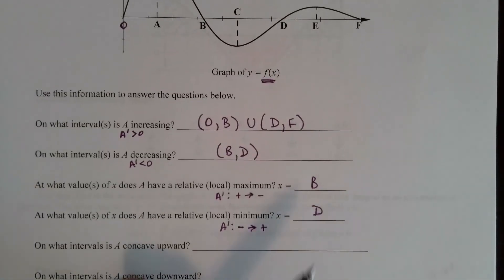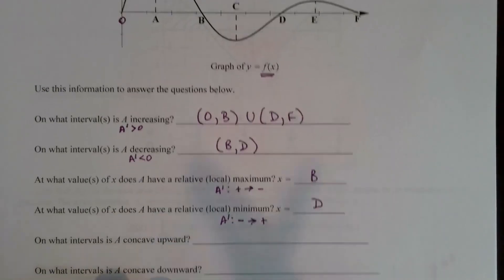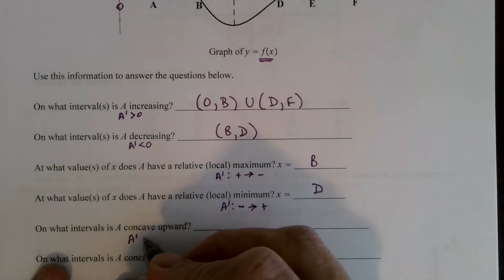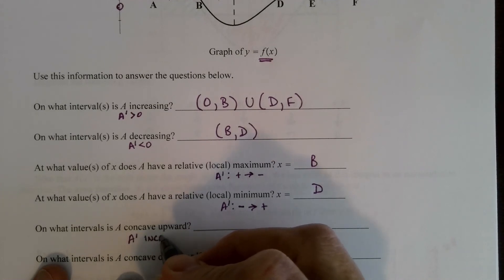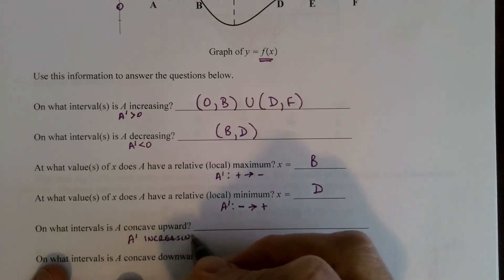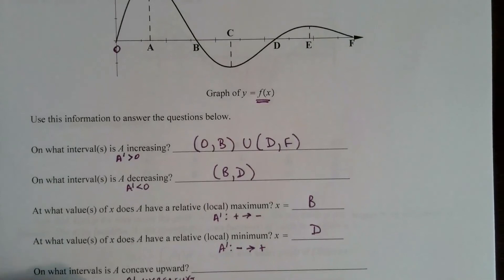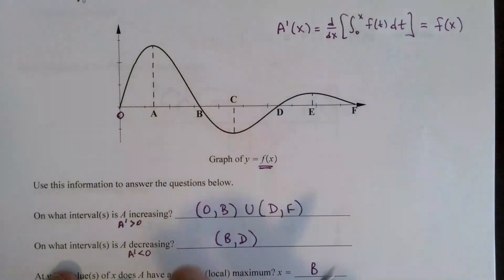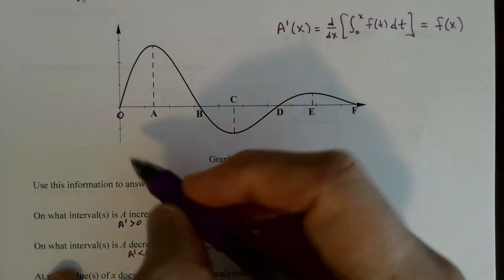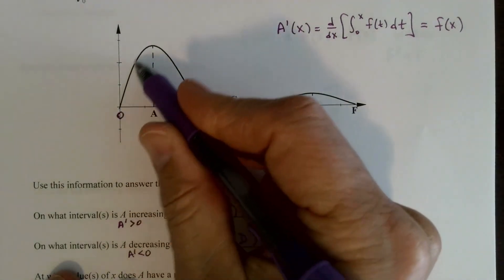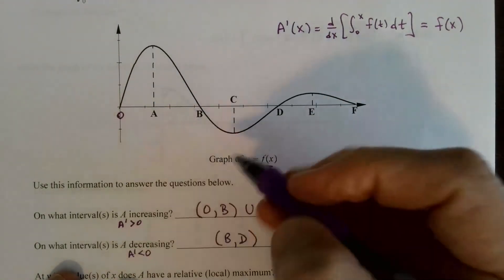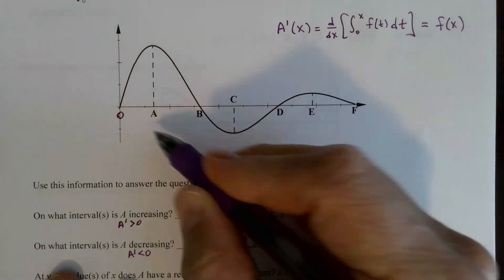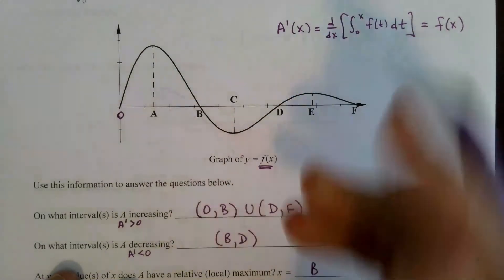On what intervals is A concave upward? That's when the derivative — f — is increasing. Where is f going up? From zero to A, and then from C all the way to E. So A is concave upward on the intervals zero to A and C to E.